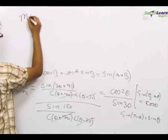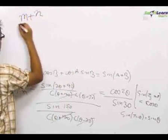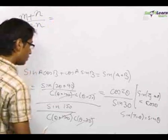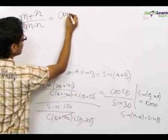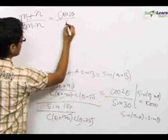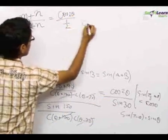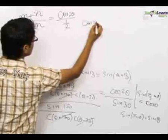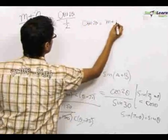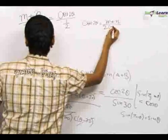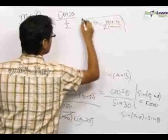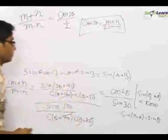So m plus n upon m minus n equals cos 2θ divided by sin 30°. Therefore, cos 2θ equals (m + n) upon (m - n) times sin 30°, which gives us the final value we wanted to find.